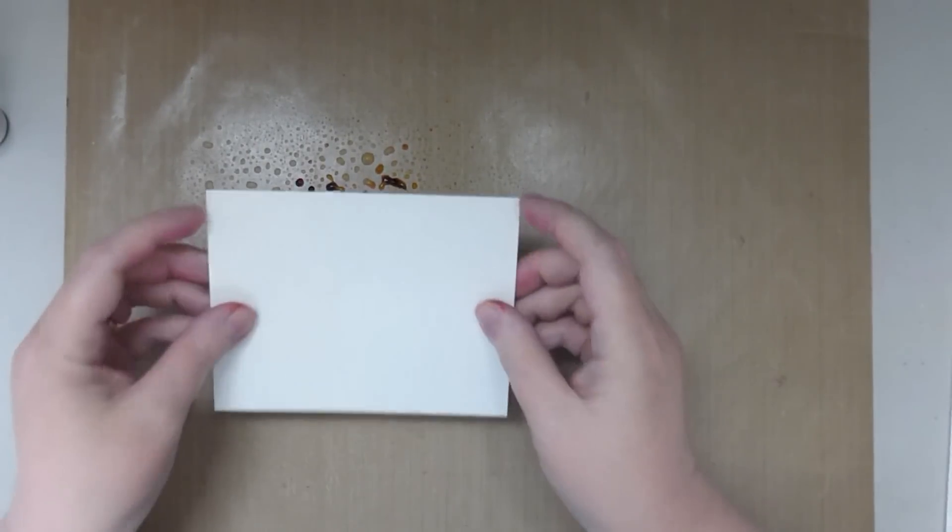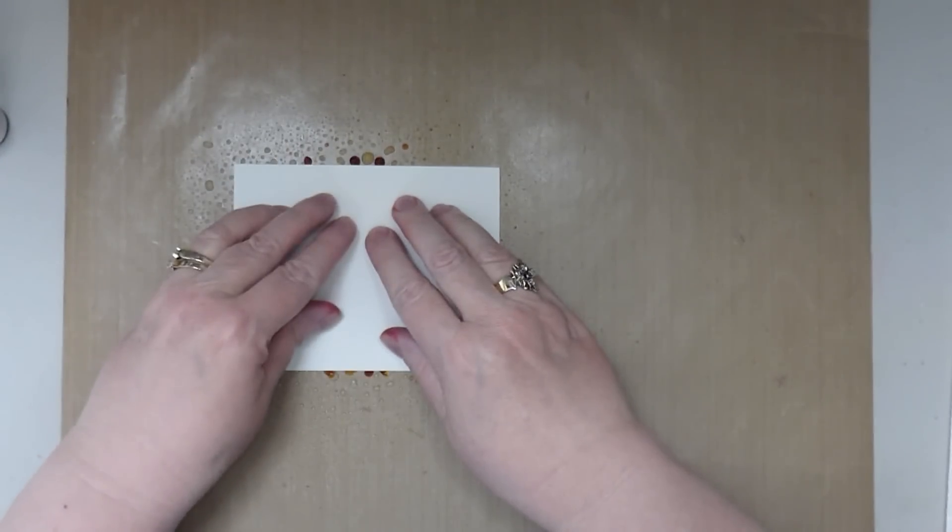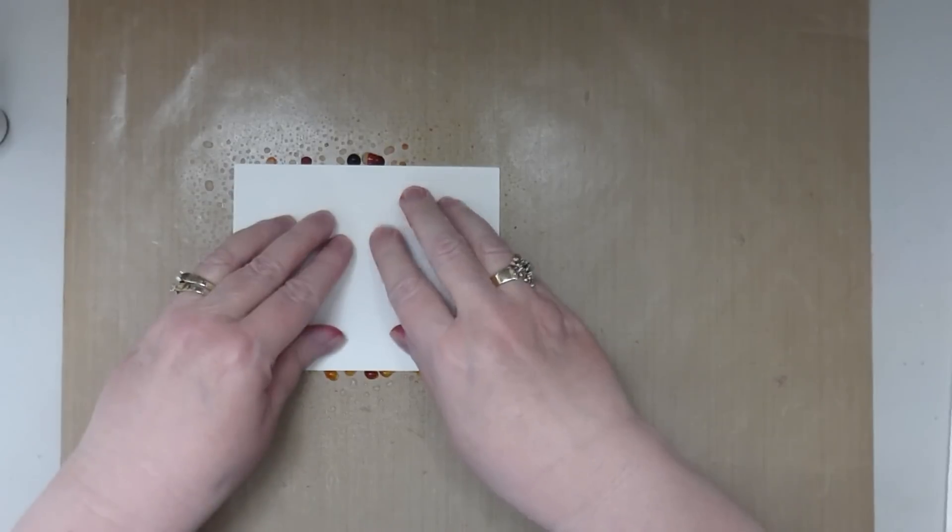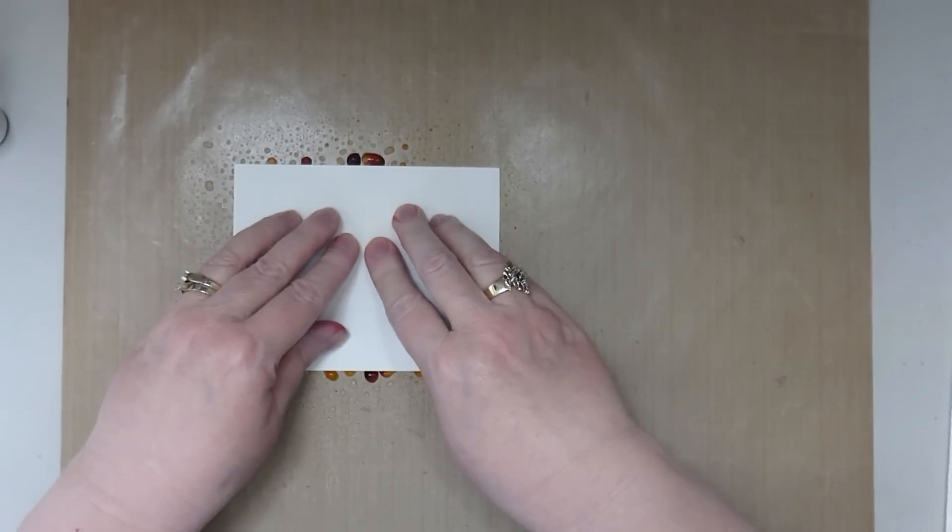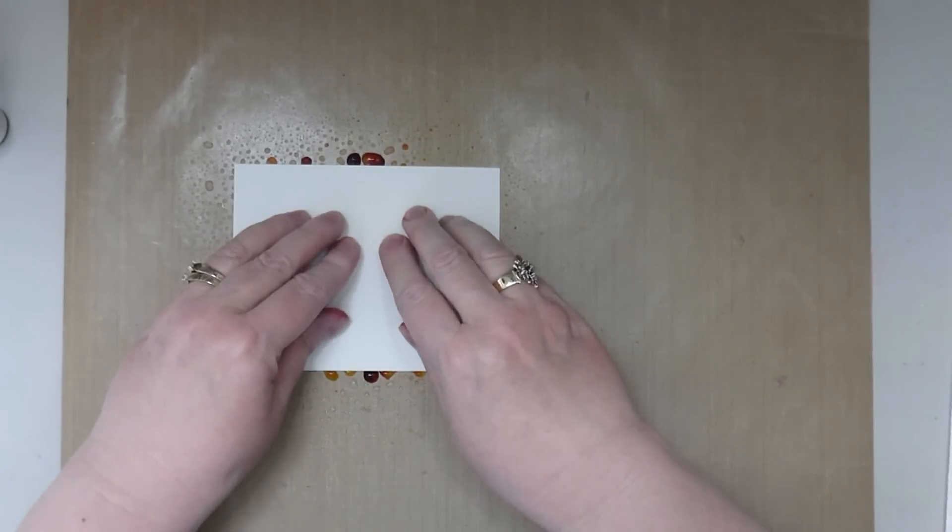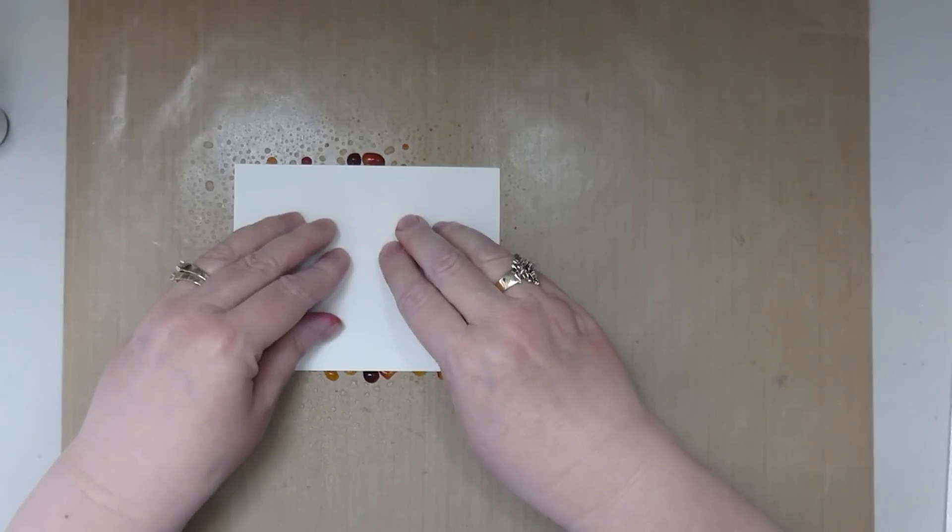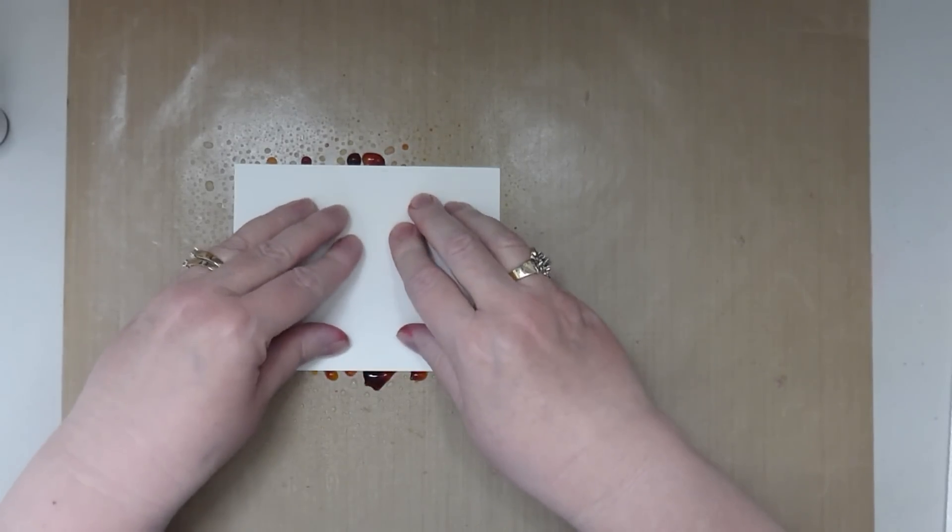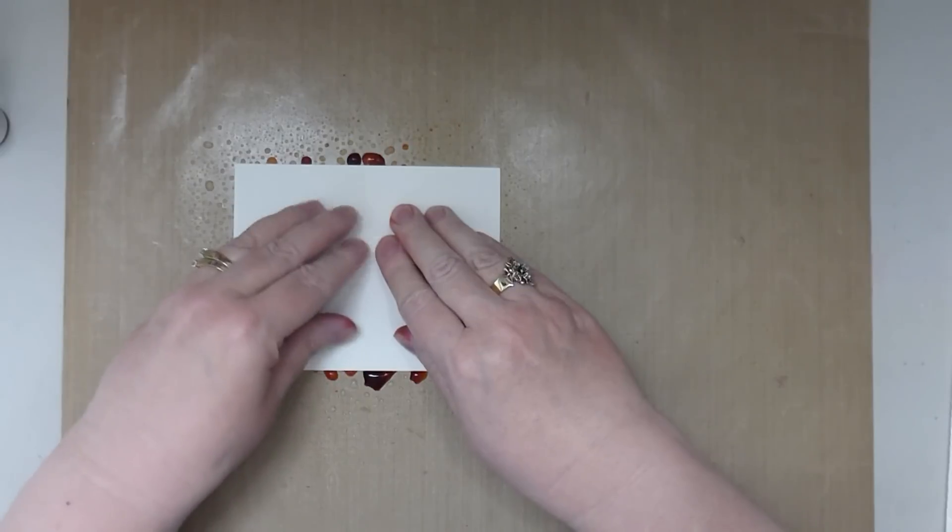Take my watercolor paper and drop it in. Press down and just let it absorb some of the ink. This is a bit of a mucky technique and you end up with inky fingers. You could always use gloves if you wanted, but I'm happy to have inky fingers.